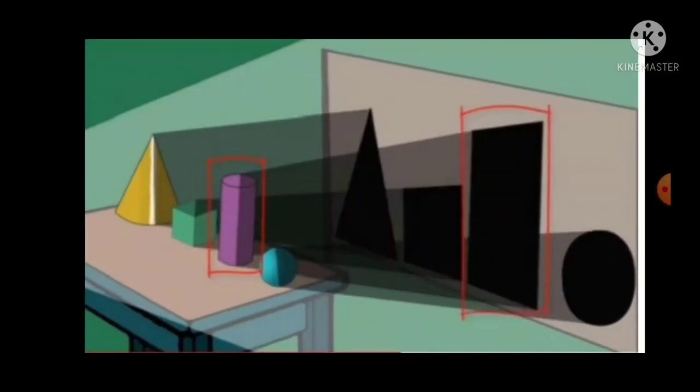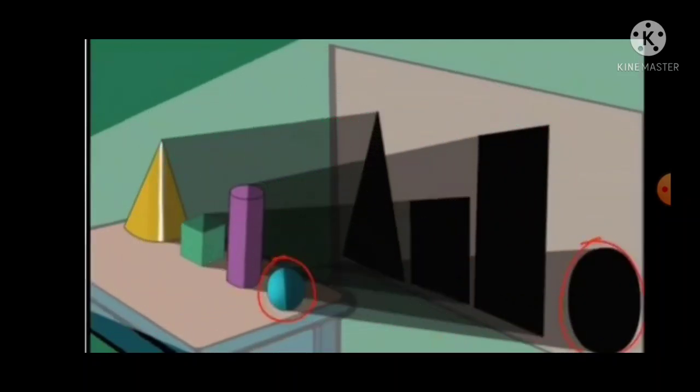And then we have taken cuboid. Its reflection we will get rectangle. So rectangle is the basic shape of cuboid. The last one is sphere shape. Yes, its reflection is circle. So what we know from this? 2D shape is the basic shape of 3D shapes or 3D object.